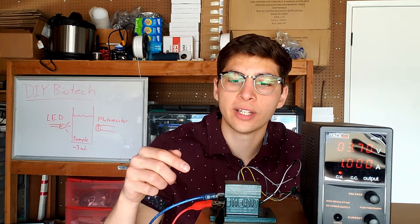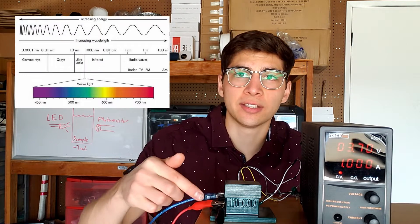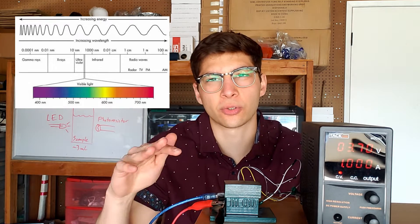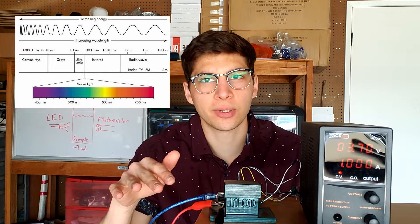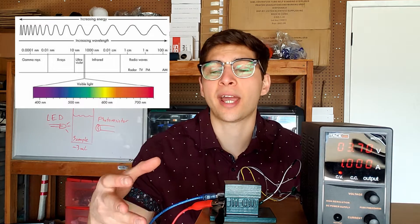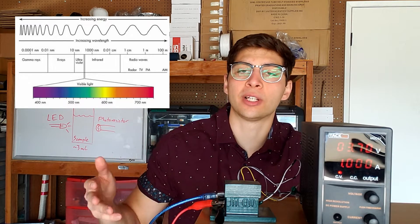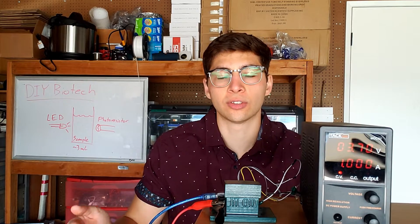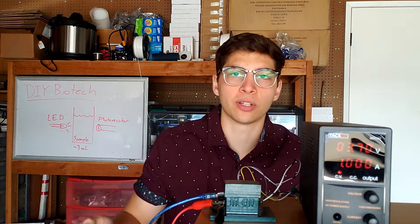The next thing to look out for is the wavelength of LED that you're using. So in this case, I'm using a red LED, which is around 675 nanometers. Most yeast and bacteria cultures in labs are measured at OD600, meaning 600 nanometers. So if you're growing yeast or bacteria, you probably want to use that.